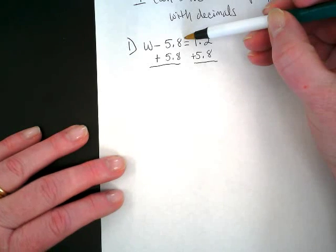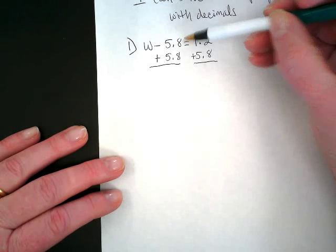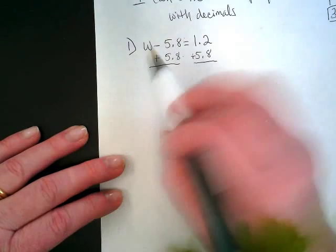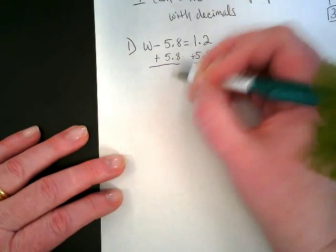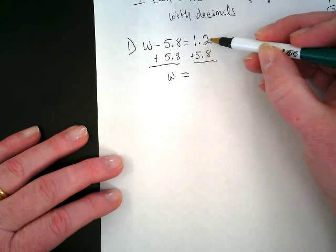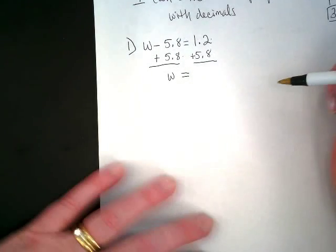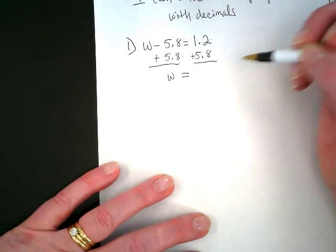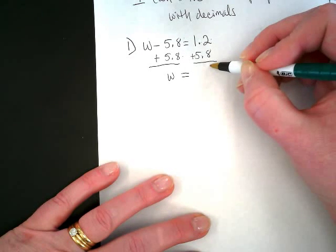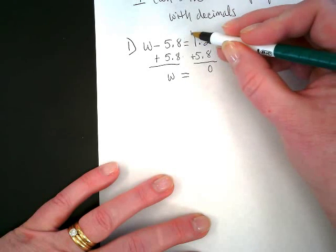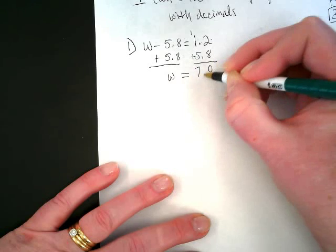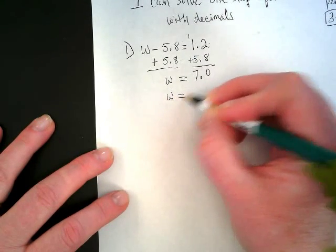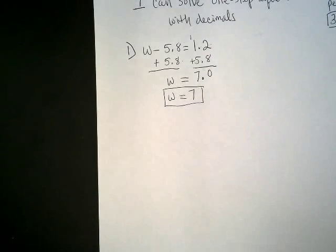If I have negative 5.8 - remember all subtractions really are negatives - and I add 5.8, what happens? You get a zero. They cancel out, right? What's left on this side of the equation? The W. Bring our equal sign down and we have 1.2 plus 5.8. I want us to do this by hand and then you can use your calculator to check. Lining up the decimal, remember those rules now that we're back to adding with decimals. 2 plus 8 is 10. We're going to carry the 1. 1 plus 1 is 2, plus 5 is 7. And bring down the decimal.